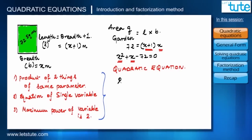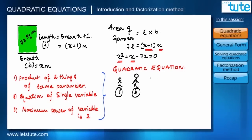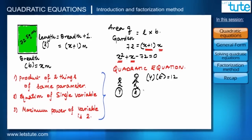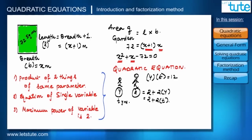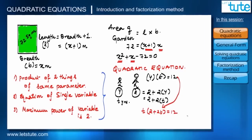Let's take one more example. There are two brothers — one younger and one elder. We know two things: the product of their ages is 12, and the elder brother's age is two more than twice the younger brother's age. If the younger brother's age is t years, then the elder brother's age is 2 + 2t. Their product equals 12, and on rearranging we get 2t² + 2t − 12 = 0.